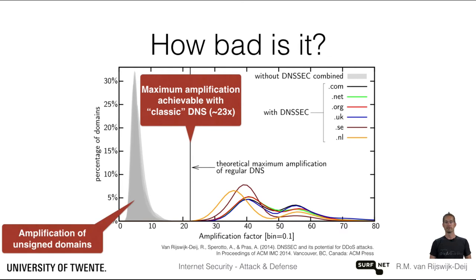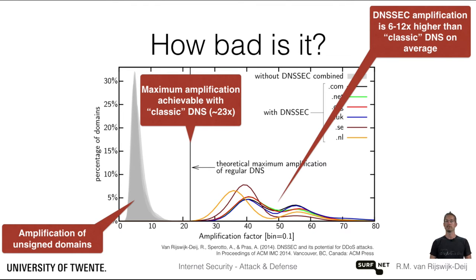The grey area on the left-hand side of the figure shows the amplification that can be achieved with our control group of 2.5 million unsigned domains. The colored lines show the amplification that can be achieved with DNSSEC signed domains. It is clear from the figure that DNSSEC signed domains almost all achieve amplification factors well above our maximum acceptable limit.